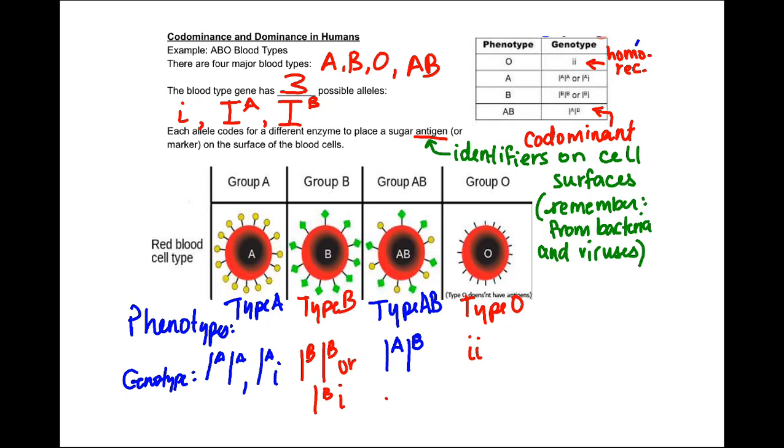A has that type A antigen on it. B, that type B. AB has both A and B antigens. And type O has absolutely no antigens on it. So, that's what allows for them to be the universal donor. That type of blood can be given to all sorts of people. And the bodies of those people won't reject it because it doesn't have that antigen on it.